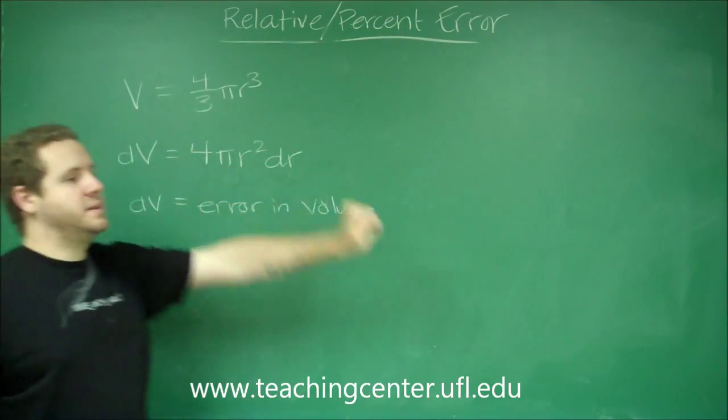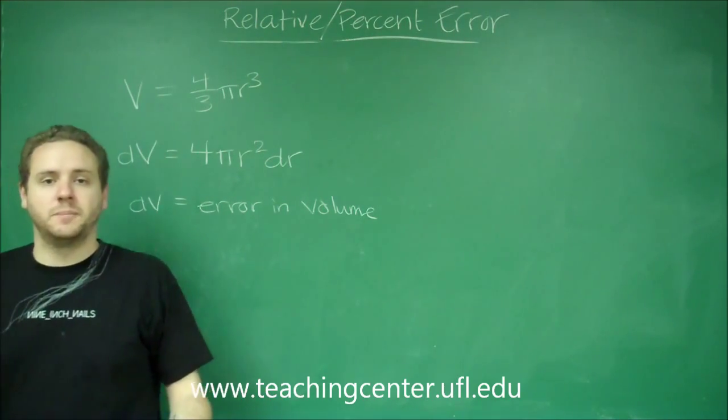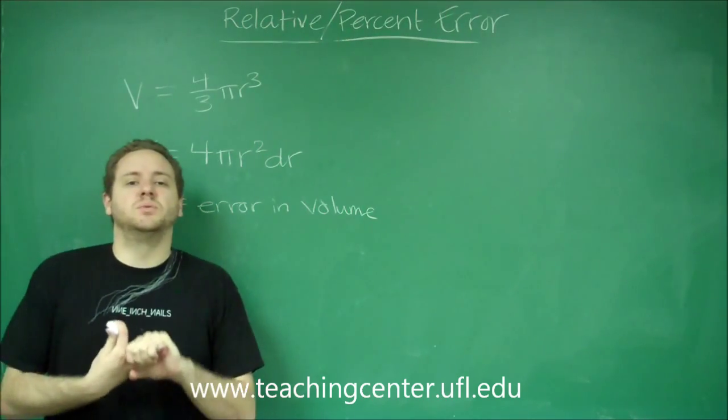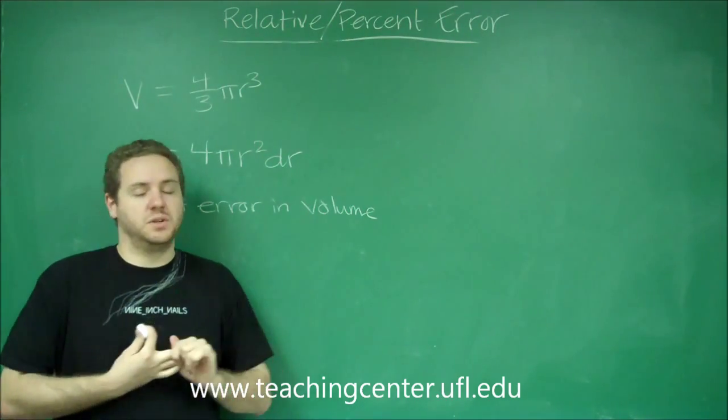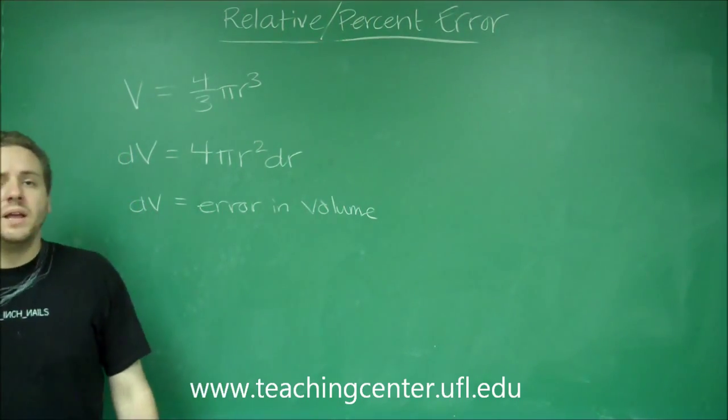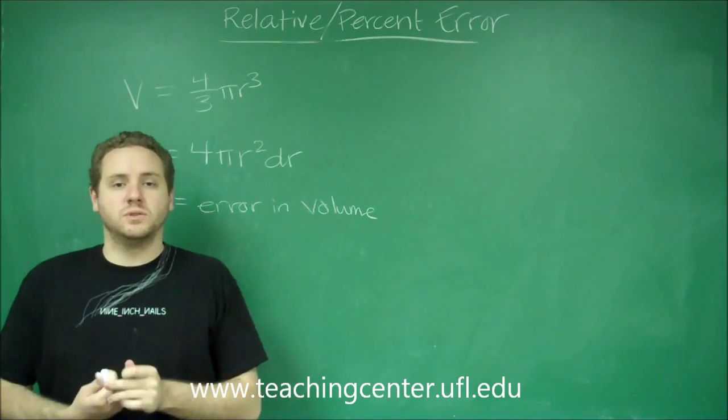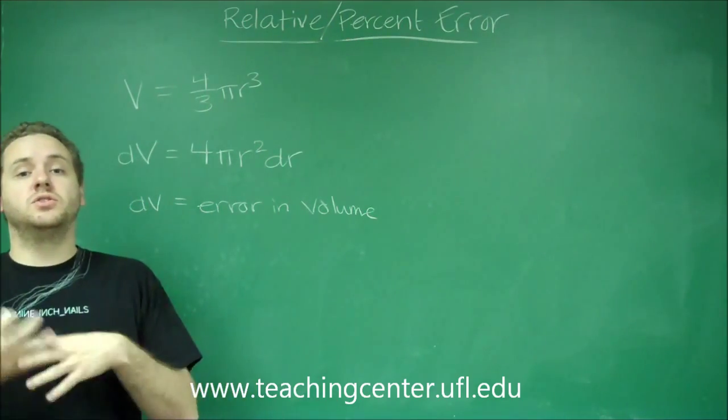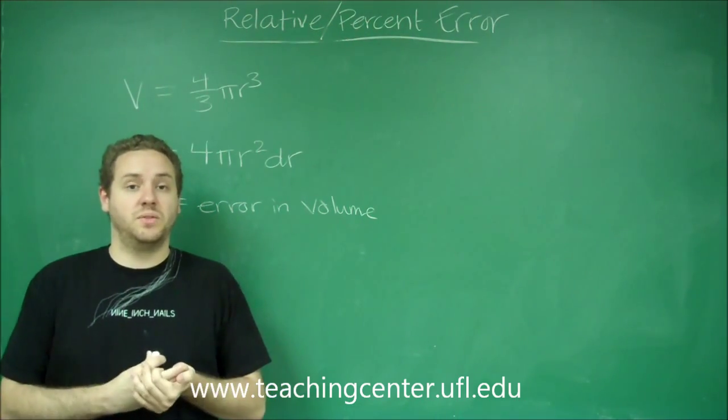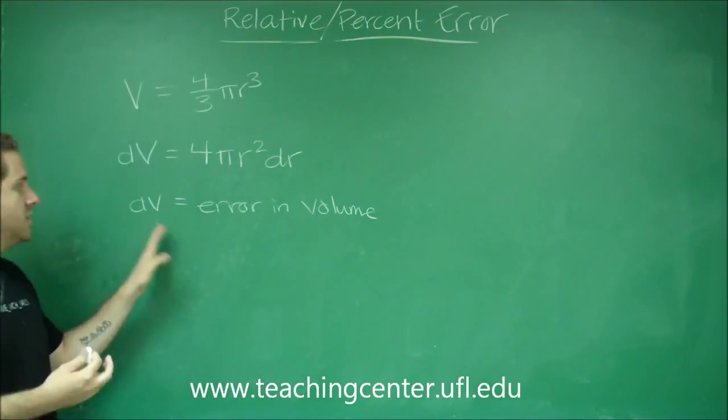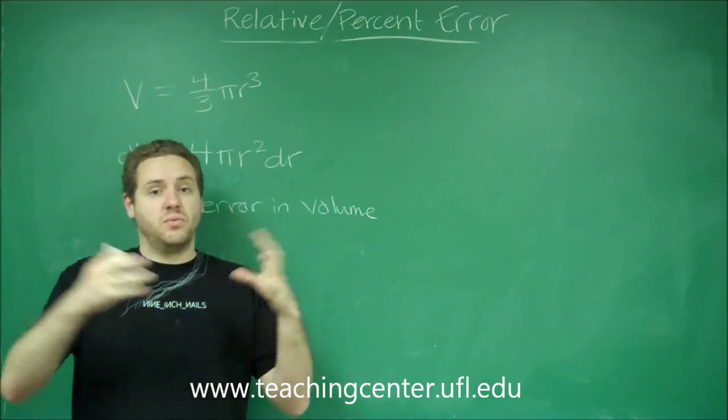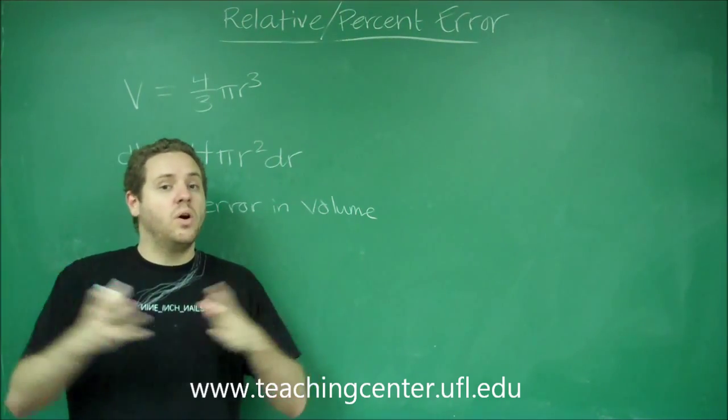But now let's go over what it means to have a relative error, percentage error. So let's say you did this problem and you got down to dV, and you got that your dV was 1, whatever unit you were using. An error of 1 in the volume, if the volume of the sphere itself was 1, is a huge error because you could be off by the same amount that your sphere actually is. It could be double its size and that's still within the error. However, if the error in your volume was 1 but the actual volume of the sphere was 1000, if it's 1000 and you're off by 1, that's not really a lot.